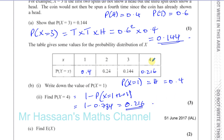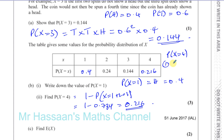I wouldn't do it this other way in the real exam because of time, but I just want to show you so that you understand what's happening. The probability of X equals 1 is just getting a head the first time. The probability of X equals 2 is getting a tail the first time and then a head, so it's 0.6 times 0.4, which is 0.24. The probability of X equals 3 is 0.6 times 0.6 times 0.4.